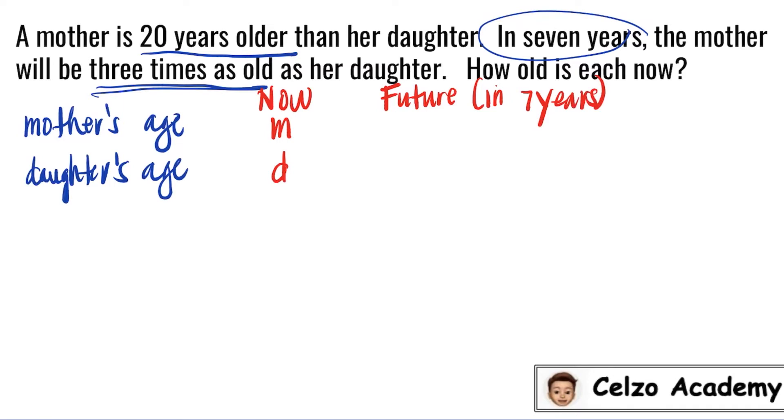If mother's age is M right now, how old is she 7 years from now? Yes, M plus 7, right? In 7 years, mother's age will be 7 more than the present age. So she will be M plus 7 years old. In 7 years, daughter will also get older. And this will be D plus 7.